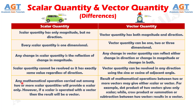Number five: any mathematical operation carried out among two or more scalar quantities will provide a scalar only. However, if a scalar is operated with a vector then the result will be a vector, whereas the result of mathematical operations between two or more vectors may give either a scalar or a vector. For example, the dot product of two vectors gives only a scalar, while the cross product, summation, or subtraction between two vectors results in a vector.